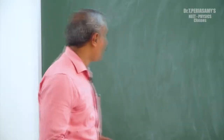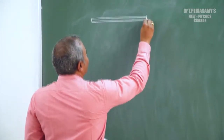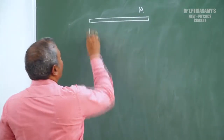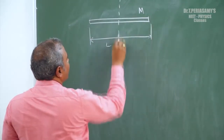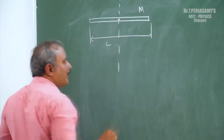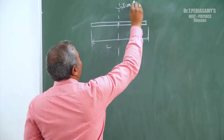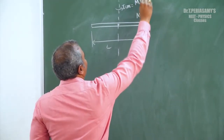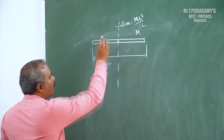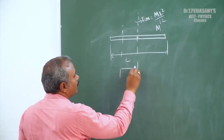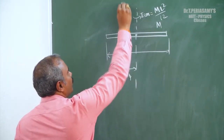A uniform rod has mass m and length l. At the center of mass, the axis passing through the center gives moment of inertia ml squared by 12. The new axis is at a distance of l by 4 from the center of mass axis.